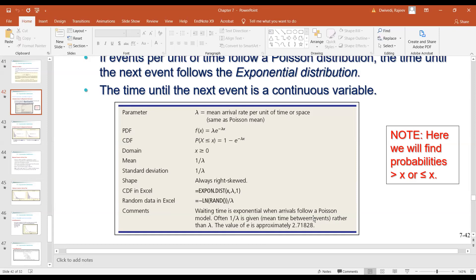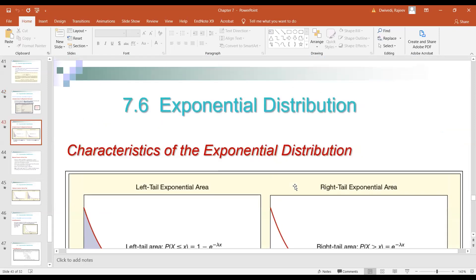Normally in question, what is given mean time between events and not the lambda. One upon lambda is mean time between events. Just this thing you have to remember in order to do that.